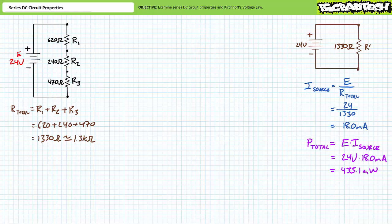Now let's use the fundamental series circuit properties to make some predictions without calculations. The largest resistor in a series circuit both drops the largest amount of voltage and dissipates the most power. R1 at 620 ohms will most likely experience the largest voltage drop and dissipate the most power. Conversely, the smallest resistor drops the smallest amount of voltage and dissipates the least power. R2 at 240 ohms will most likely experience the smallest voltage drop and dissipate the least power. We might expect R3 at 470 ohms to be midway between these extremes.